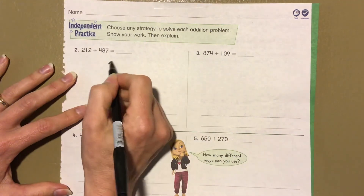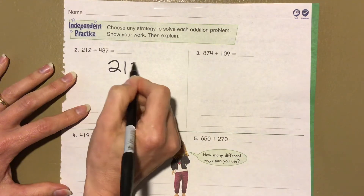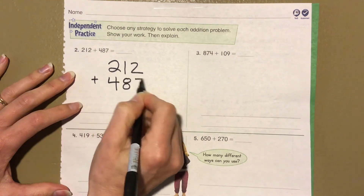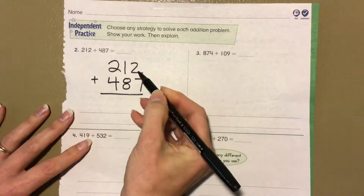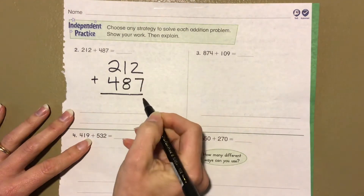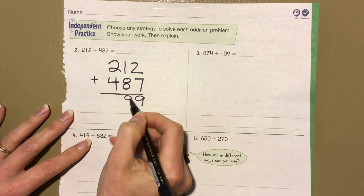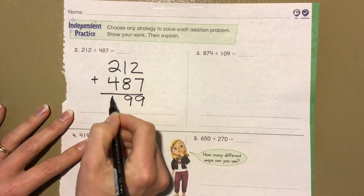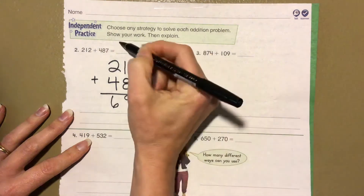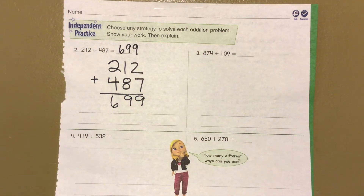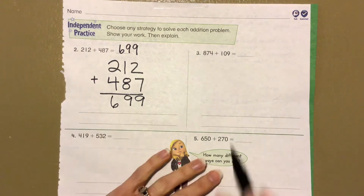I'm going to stack them and add by columns. So 212 plus 487: 2 plus 7 is 9, 1 plus 8 is 9, 2 plus 4 is 6 — a sum of 699. I didn't even need to regroup on that one. Easy peasy.